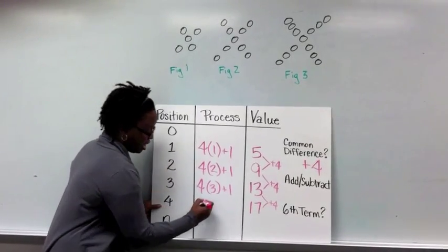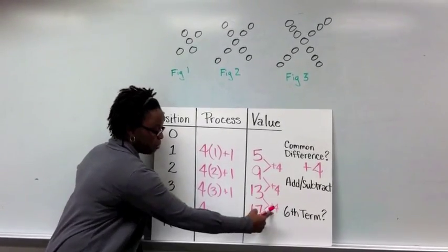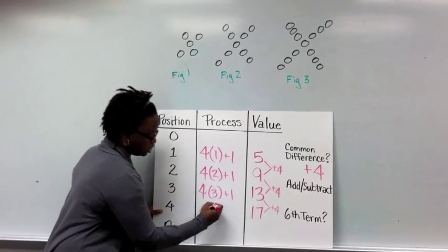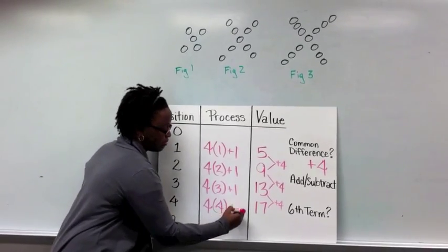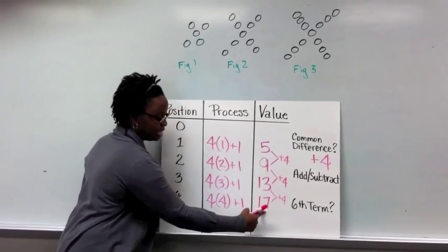And even for 4, I've got my common difference of 4 times my position, meaning this is x number 4. That's only 16. So I've got to add 1 more to get to 17.